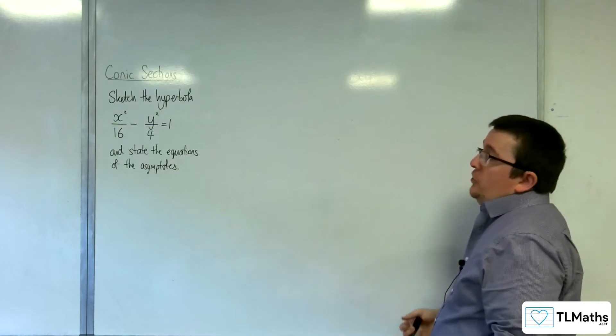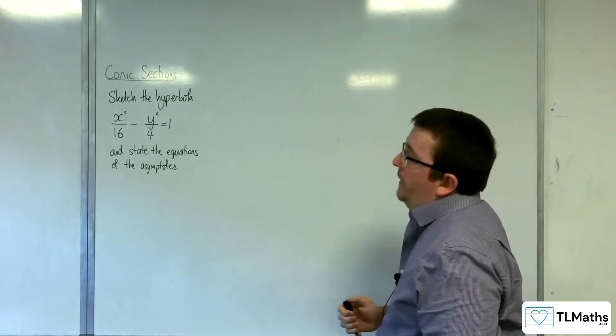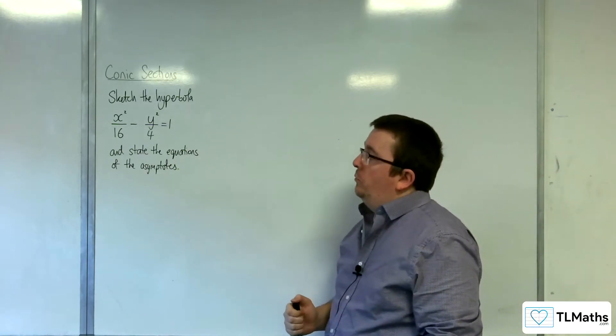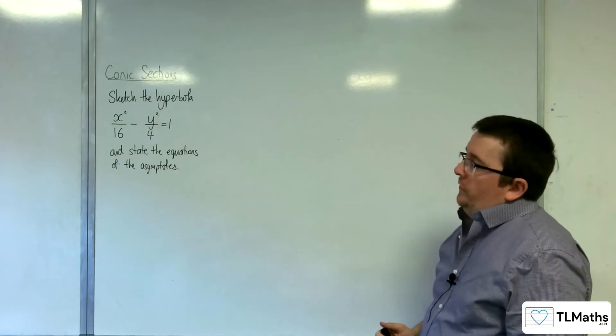In this video, we need to sketch the hyperbola x squared over 16, take away y squared over 4 equals 1, and state the equations of the asymptotes.